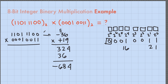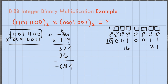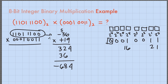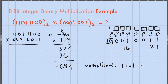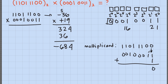Since the multiplicand is in 2's complement form, we have to convert it to its true form. We multiply only the magnitude bits of the multiplicand and the multiplier, then attach the sign bit to the resulting product. To convert 11011100 to true form: get its 1's complement — 00100011 — then add 1 to its least significant bit: 1+1=0 carry 1, 1+1=0 carry 1, then 1+0=1, and copy the remaining bits. We can now perform binary multiplication with both numbers in true form.